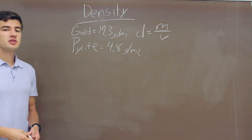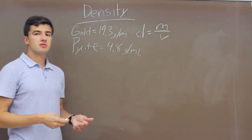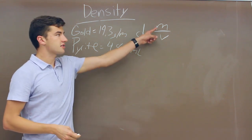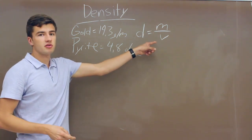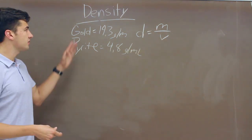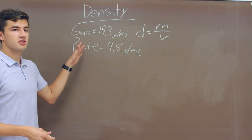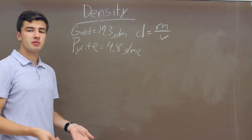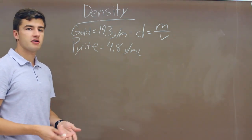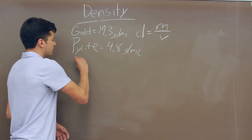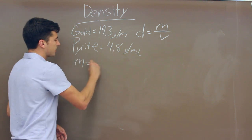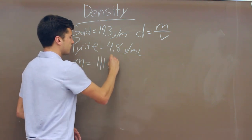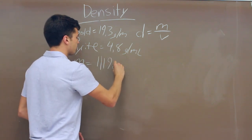So now we determine what the density of our object is by calculating the mass and the volume, and then we can see which one of these it's closest to. We'll determine the mass by putting it on a scale and weighing it, and we find that the mass is equal to 1,119 grams.